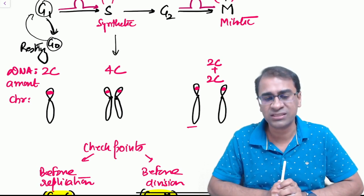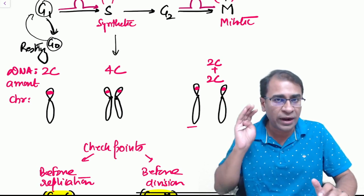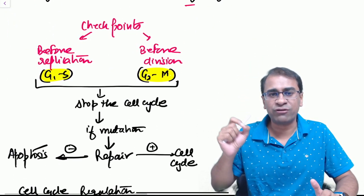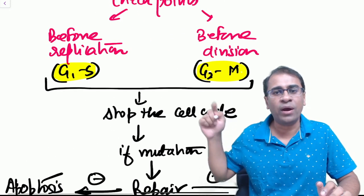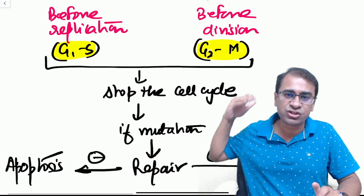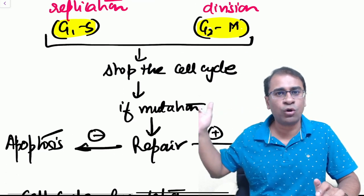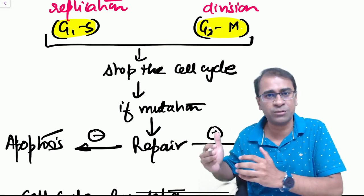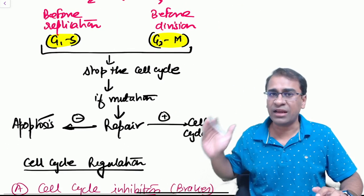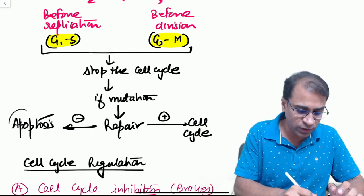To understand the mutations, we have to understand the checkpoints. The two key checkpoints: one is G1-S checkpoint and one is G2-M checkpoint. A cell will stop at a checkpoint and if there's a mutation will cause repair if it is possible. If repair is possible it will go back to cell cycle, but if it is not possible the cell has to undergo cell death called apoptosis.